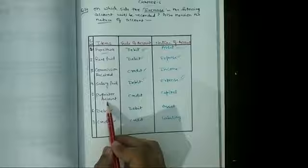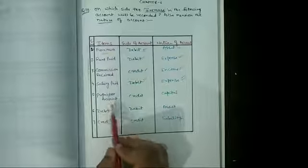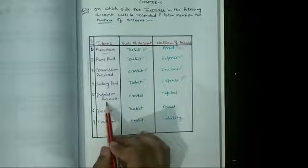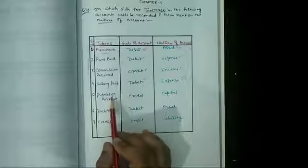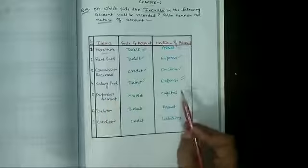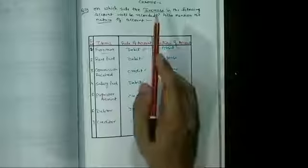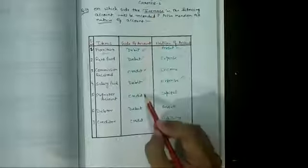Next one is proprietor account, means capital account. वो proprietor किसे बोलते है - owner को, और owner का business में क्या लगा होता है? Capital. Capital अगर हमारी increase होती है तो वो कहां जाती है? Credit में.